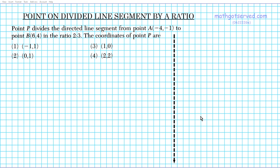Good day students, welcome to mathgotserved.com. In this clip we're going to be taking a look at an example of finding the coordinates of a point on a divided line segment by a specified ratio. Question reads, point P divides the directed line segment from point A(-4, -1) to point B(6, 4) in the ratio 2 to 3. The coordinates of point P are...